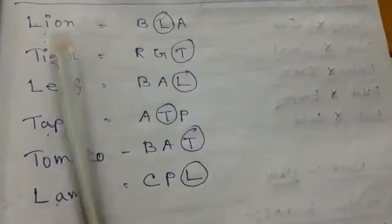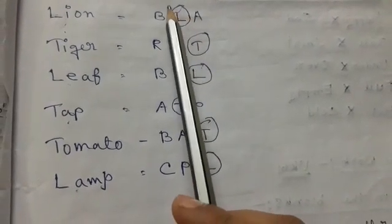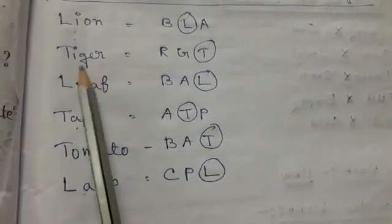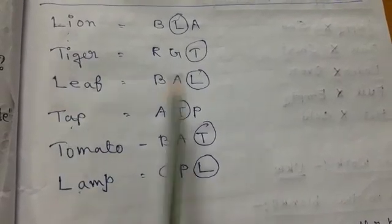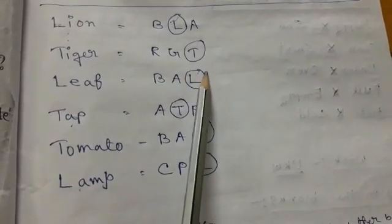Lion starts from the letter L, so you have to circle the letter L. T for tiger, so you have to circle the letter T. Leaf - L for leaf, so you have to circle the letter L.